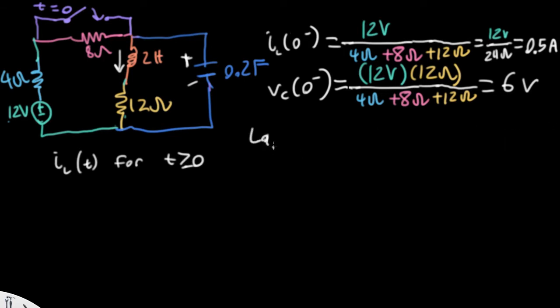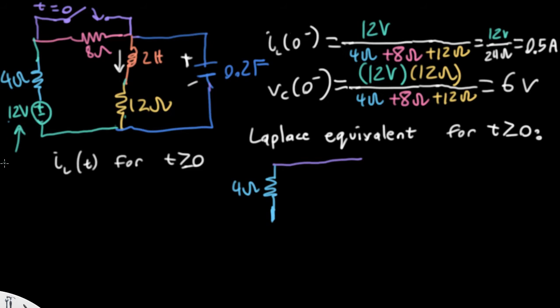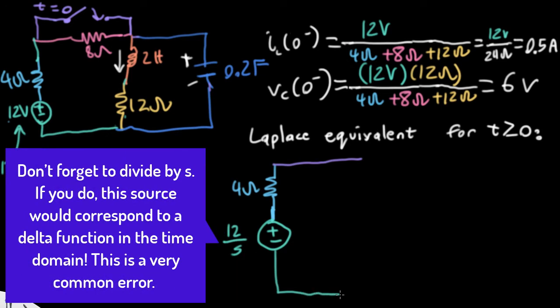So let's draw a Laplace equivalent for this circuit for the T bigger than zero case. Once the switch is flipped, the 8 ohm resistor is bypassed. I'll have a 4 ohm resistor here. This is the most boring Laplace equivalent component that we have. When we think about what's happening with this 12 volt battery in the time domain, in this Laplace framework, it's best to think of it as having a u(t) attached to it, because that's what our unilateral Laplace transforms know how to deal with. So I'm going to draw this as having a Laplace transform of 12 over S. We'll also have a fairly boring 12 ohm resistor down here.